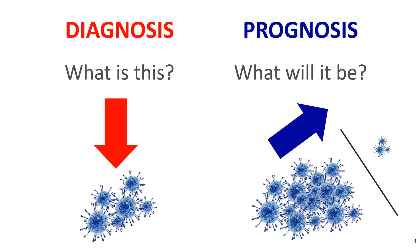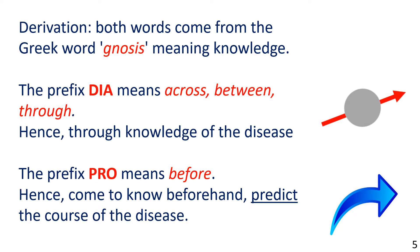Let's look at the derivation. Both words come from the Greek word gnosis, meaning knowledge. The prefix dia means across, between, through — hence through knowledge of the disease. The prefix pro means before, hence come to know beforehand, predict the course of the disease.